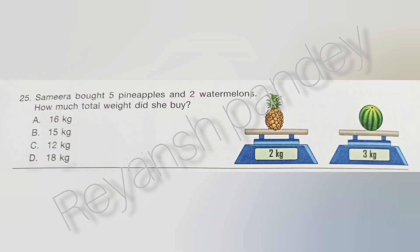Samira bought 5 pineapples and 2 watermelons. What is the total weight she bought? The answer is A — 16.